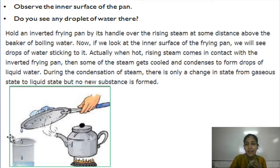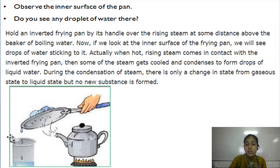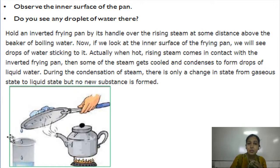Actually, when the rising steam comes in contact with the inverted frying pan, some of the steam gets cooled and it condenses to form drops of liquid water. During the condensation of steam, there is only a change in state from the gaseous state to the liquid state, but no new substance is formed.